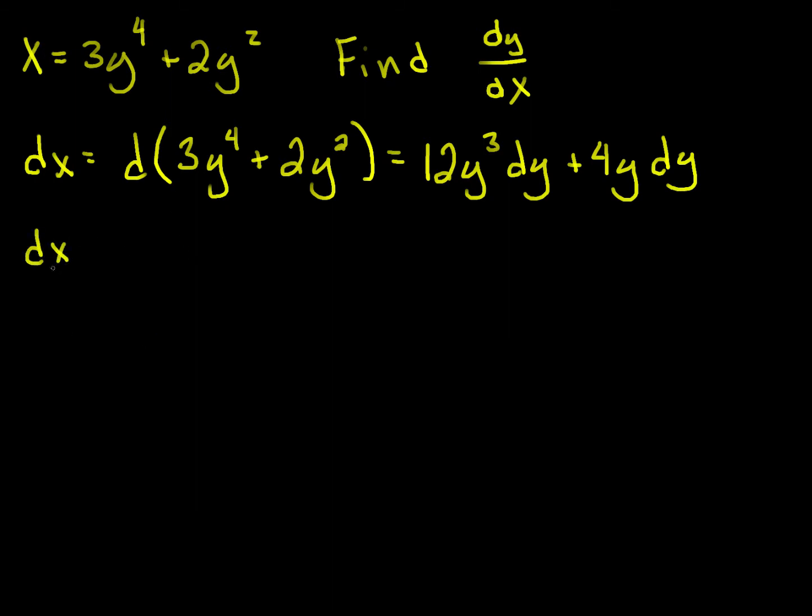So dx/dy is equal to 12y cubed plus 4y, which tells me that dy/dx is just the reciprocal of that: one over 12y cubed plus 4y. And that's as good as I get because I can't replace y with x. I don't know what its relationship is, but that's fine. dy/dx, y is a function of x, and so this is a perfectly good solution.